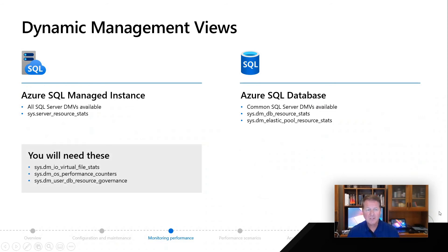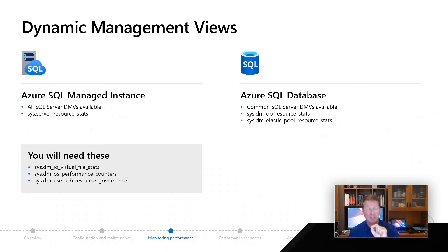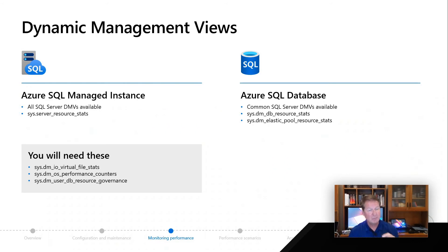Things like sys.dm_io_virtual_file_stats — that's pretty important. That's going to be one of the key elements for you to look at IO latencies in your Managed Instance and database deployments. Even sys.dm_os_performance_counters for the SQL performance counters are available to you both in MI and database. And sys.dm_user_db_resource_governance is an interesting one we're going to look at later in a demonstration.